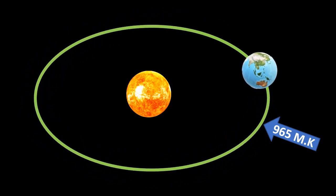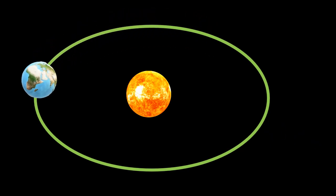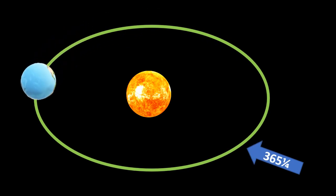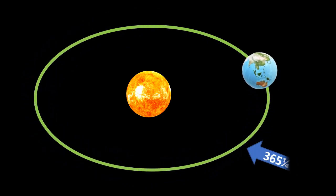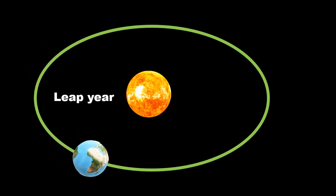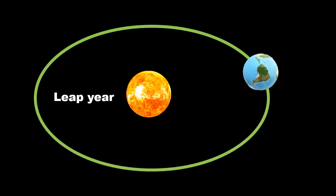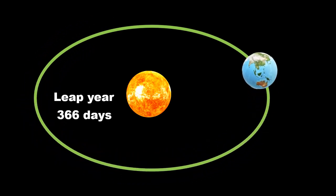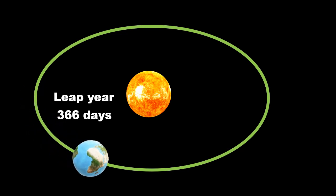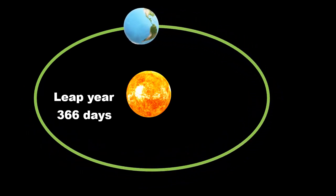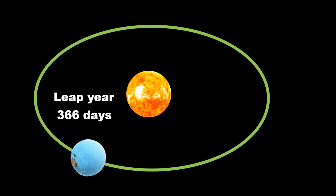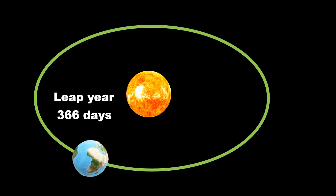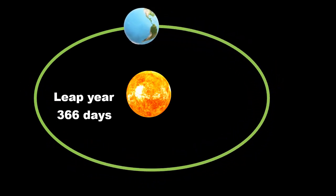The remaining one-fourth of a day is added once every four years, and that year is known as a leap year. A leap year consists of 366 days. In a leap year, the month of February has 29 days, while in a normal year February has 28 days.